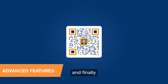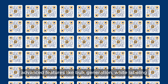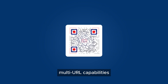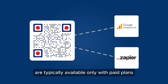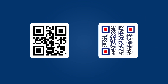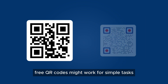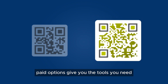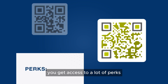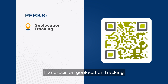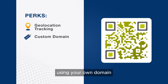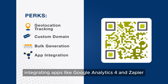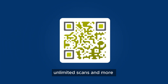Finally, advanced features like bulk generation, white labeling, multi-URL capabilities, and integration with other tools are typically available only with paid plans. Free QR codes might work for simple tasks, but if you want more control and the ability to adapt and scale, paid options give you the tools you need. You get access to perks like precision geolocation tracking, using your own domain, generating thousands of QR codes in one sitting, integrating apps like Google Analytics 4 and Zapier, and unlimited scans.